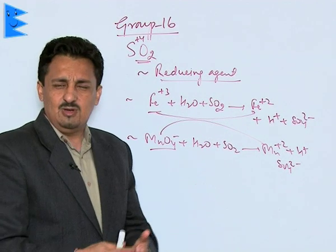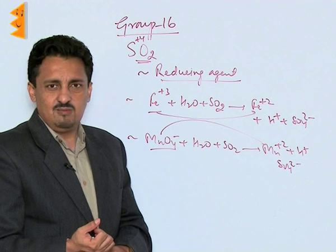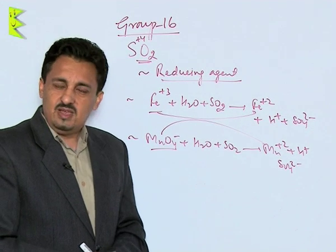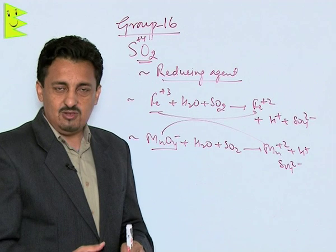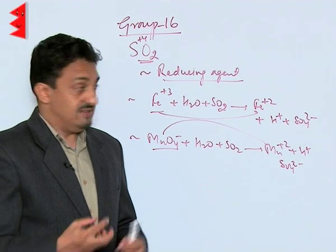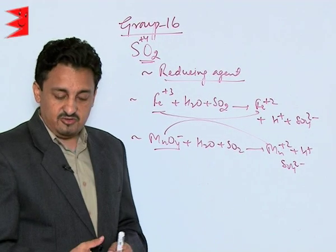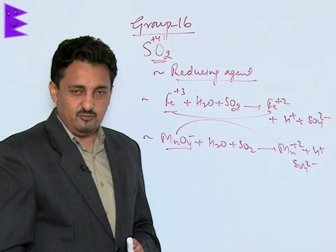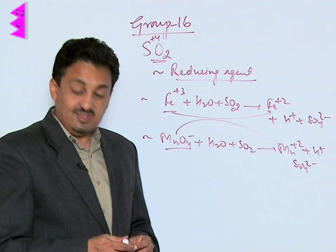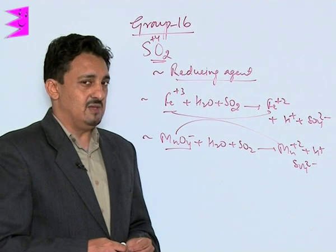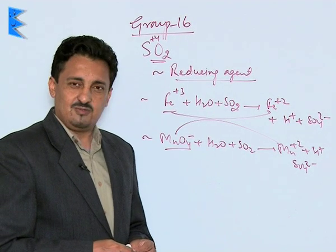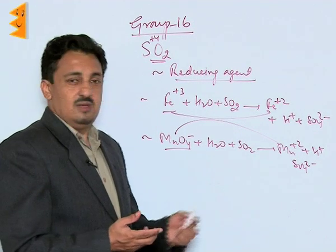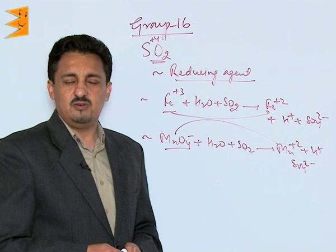Industrially, SO2 is used in petroleum refining, refining of sugar, and as a bleaching and anti-chlor agent — particularly for bleaching wool and silk. It is also used in the preparation of sulphide salt compounds.